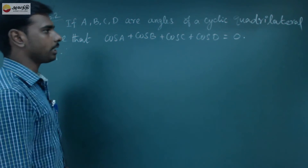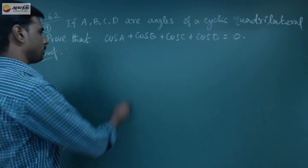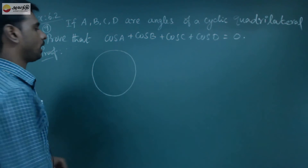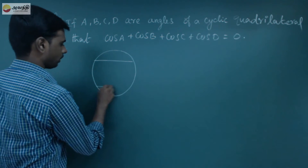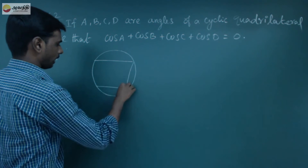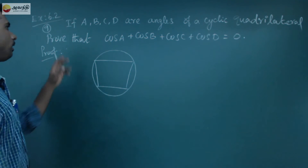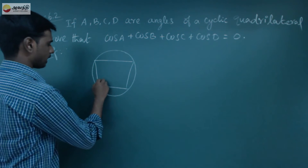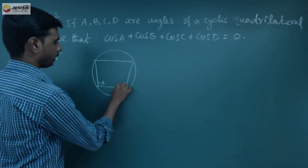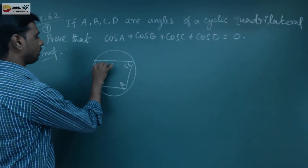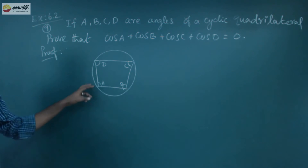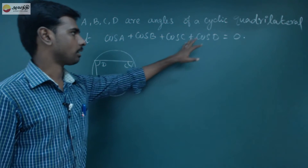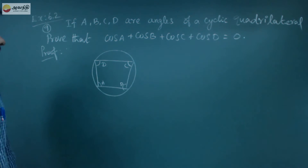First, let's consider a cyclic quadrilateral. Draw a circle and inscribe a quadrilateral. Connect the vertices and label the angles. So we have four angles: angle a, angle b, angle c, and angle d. We need to prove that cos a plus cos b plus cos c plus cos d equals 0.